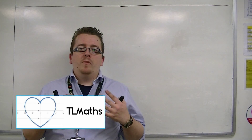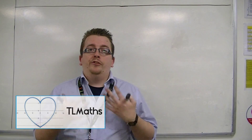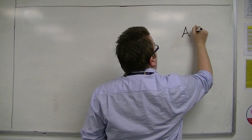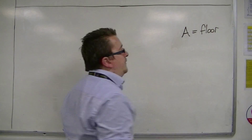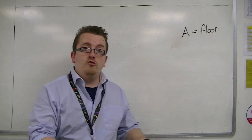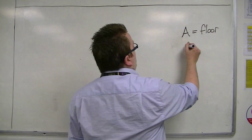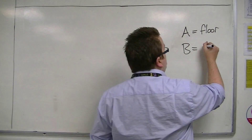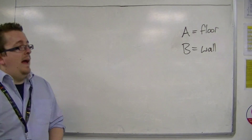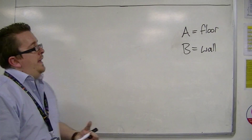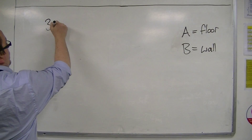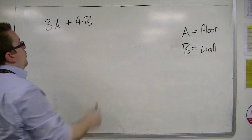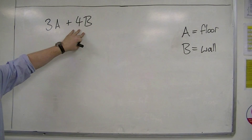Let's say a builder has two charges depending on what he's going to be doing. He has charge one, which is for a floor — so in order to put down flooring, put down carpet, something like that. And then he has job B, which could be wallpapering or a wall. He's employed so that he needs to do three floors and four walls.